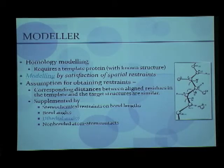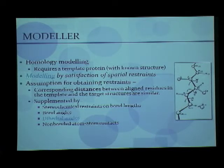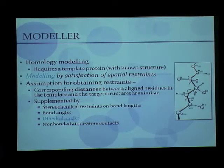What Modeler does is homology modeling — it takes a chain, uses it as a template, and threads the protein that we want to model over that chain to predict a structure. This modeling is done by satisfaction of different spatial restraints such as bond lengths, bond angles, dihedral angles, and non-bonded atom-atom contacts.